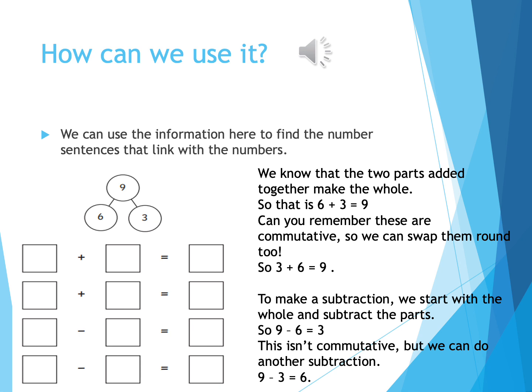To make a subtraction we start with the whole and we subtract the parts. So 9 take away 6 leaves us with 3 but this isn't commutative but we can do another subtraction here. We can have 9 subtract 3, which will leave 6.